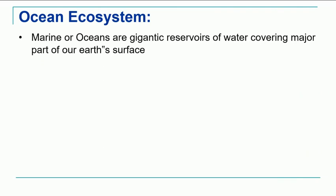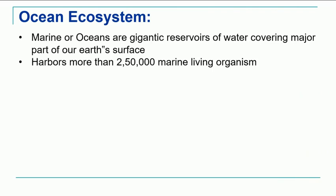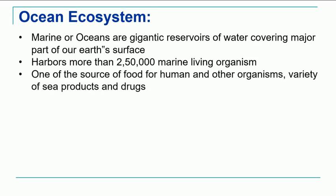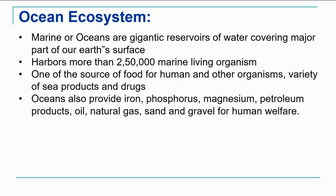The characteristics of ocean ecosystems: these marine oceans are very large reservoirs of water covering the entire earth's surface. They harbor more than 250,000 marine species of organisms and are one of the important sources of food for humans and other organisms in the form of different sea products as well as different drugs. Not only food and drugs, but they also provide iron, phosphorus, magnesium, petroleum products like oil, natural gas, as well as sand and gravel.